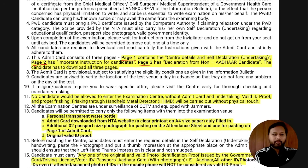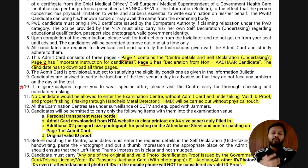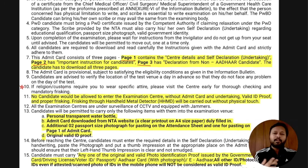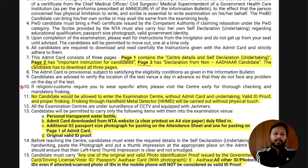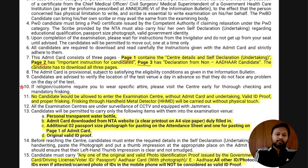One very important point: if religion or custom requires you to wear a specific attire — for example, a turban for Sikh candidates or a baya for Muslim candidates — please visit the examination center early for thorough checking and mandatory frisking. Frisking is the checking done with a metallic instrument to verify you are not hiding anything.